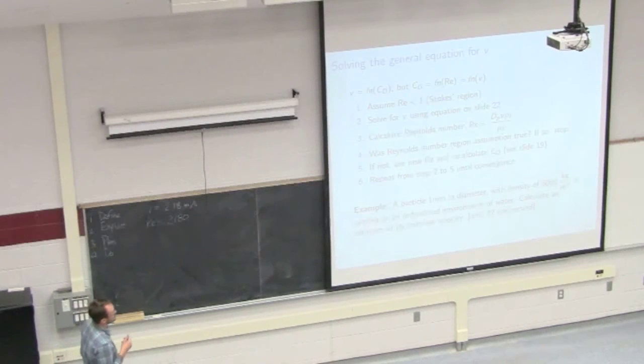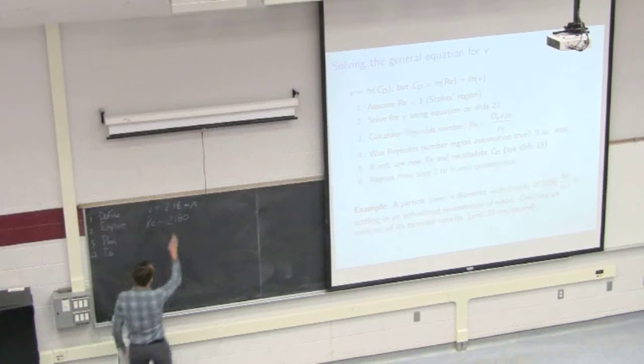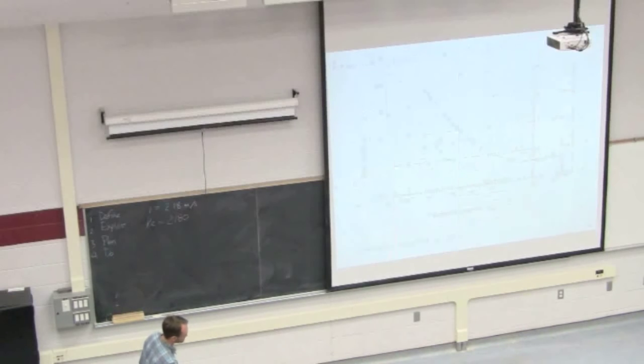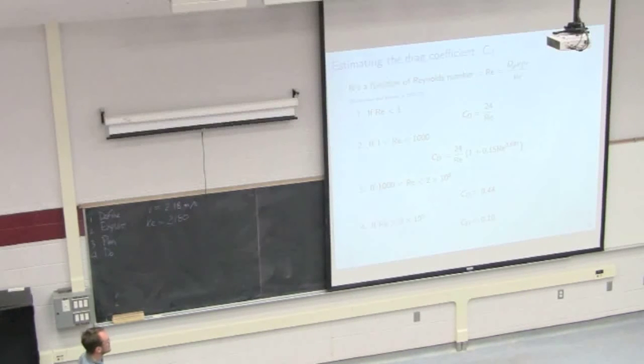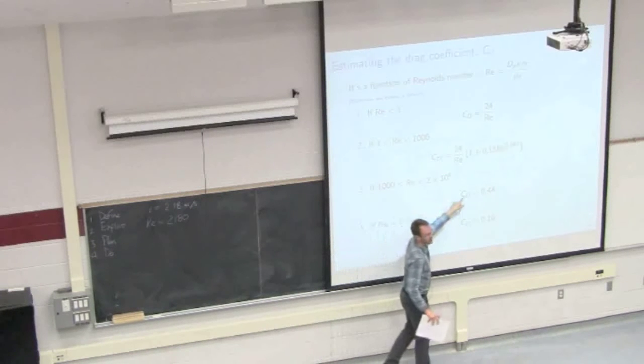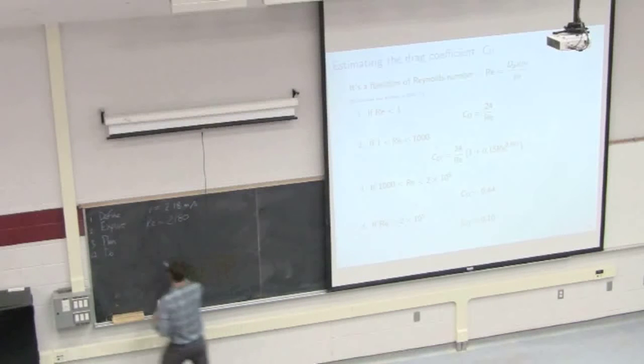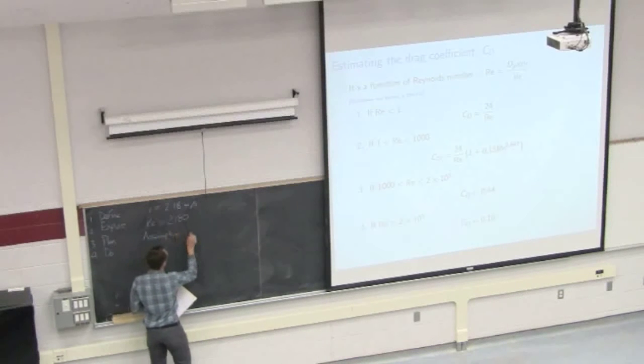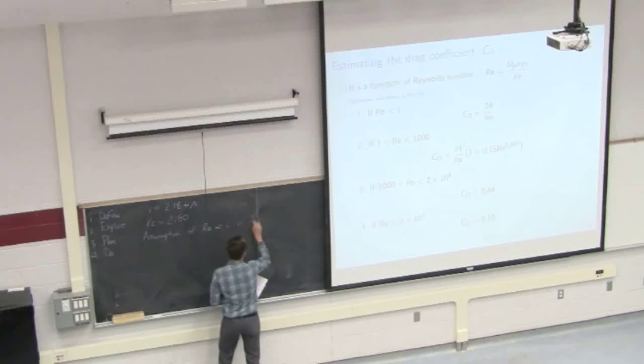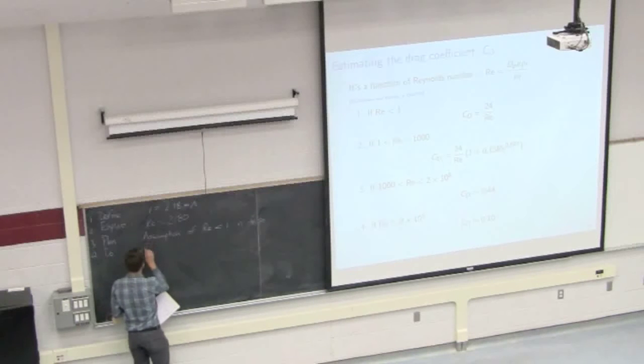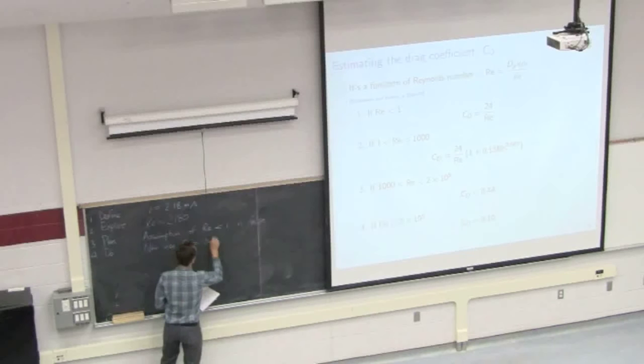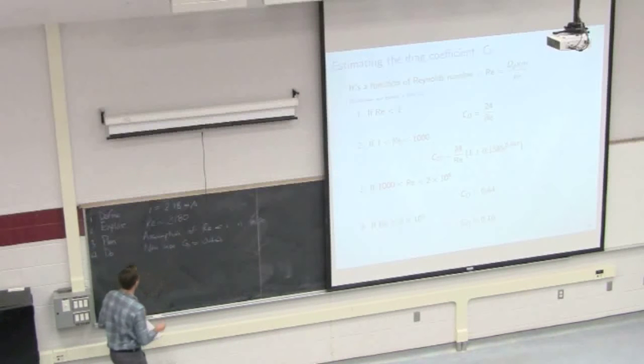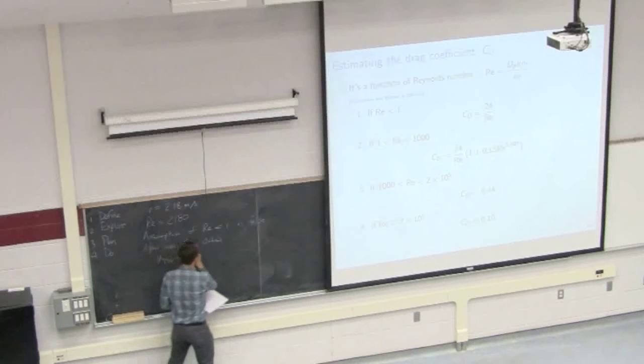So our plan is then, if this velocity is 2.18, Reynolds number is 2000, let's go use Reynolds number of about 2000 and recalculate that drag coefficient. Clearly we were not in the right region. So now it says we should probably use this drag coefficient here, CD is 0.44.